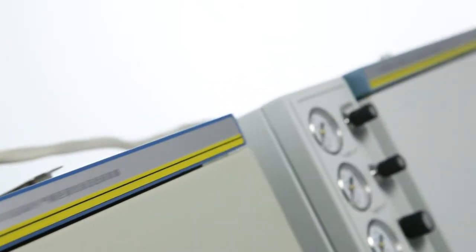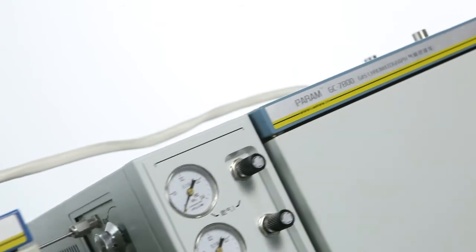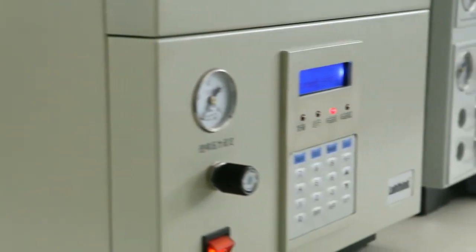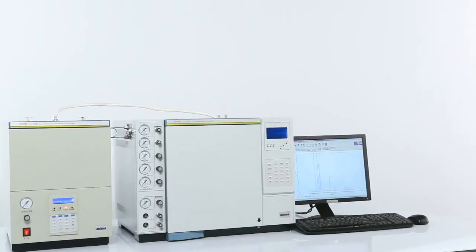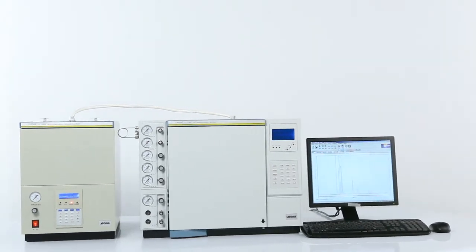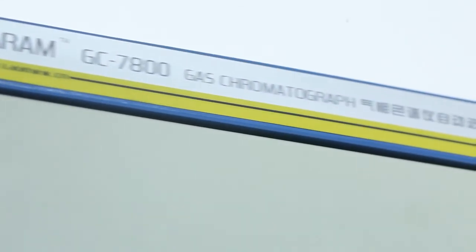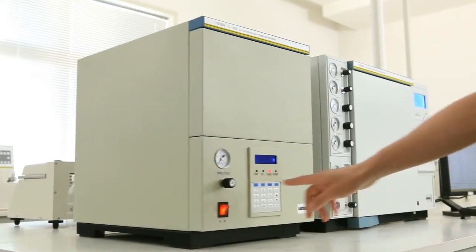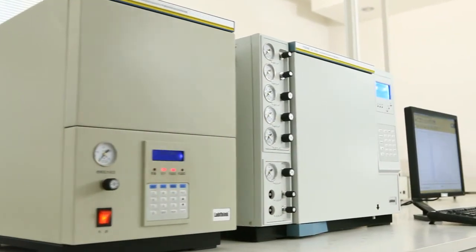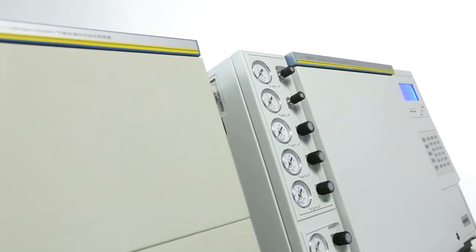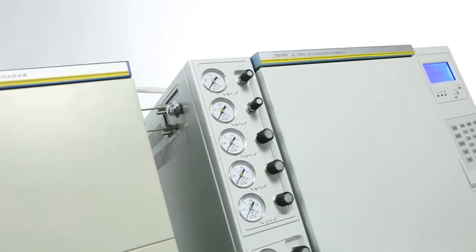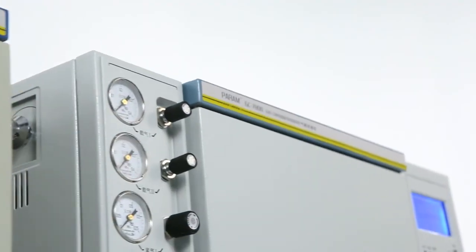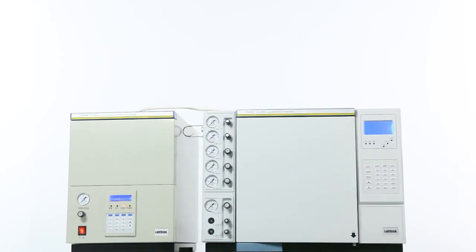The GC7800 automatic organic solvent residue analyzing system is widely used in the printing and packaging related fields and provides an excellent solution for testing services organizations, research institutions, packaging manufacturers, and food and pharmaceutical industries to conduct high-precision residue and purity analysis of organic solvents.